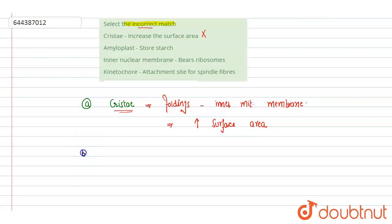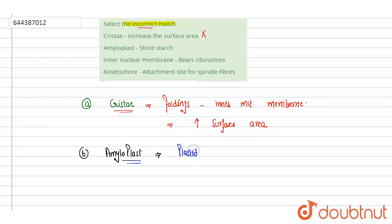The second option is amyloplast. Amyloplast is a type of plastid, a characteristic feature of plants — not present in animal cells. These plastids help in the storage of starch, which is why they are called amyloplast, as 'amylo' refers to starch. This is again a correct match, not the incorrect one.